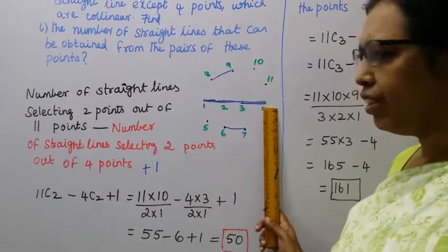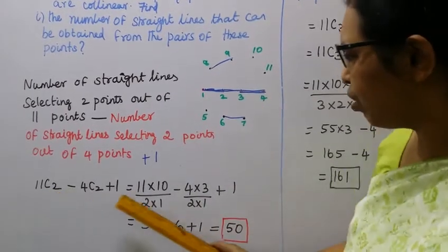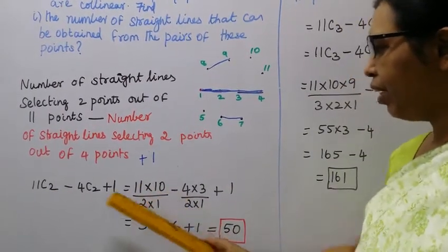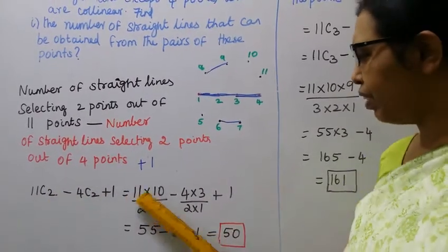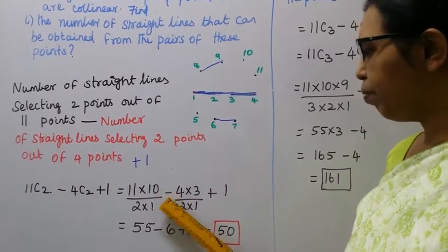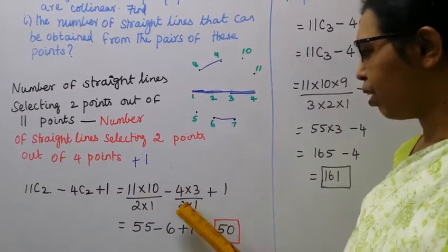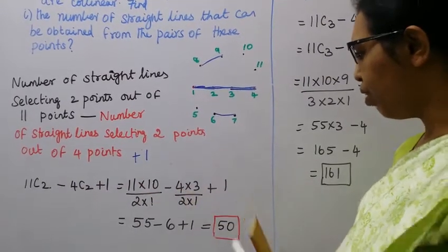Plus one is equal to 11C2: 11 into 10, decreasing by 2. Two numbers: 11 into 10 by 2 into 1. Minus 4C2: 4 into 3 by 2 into 1, plus one.